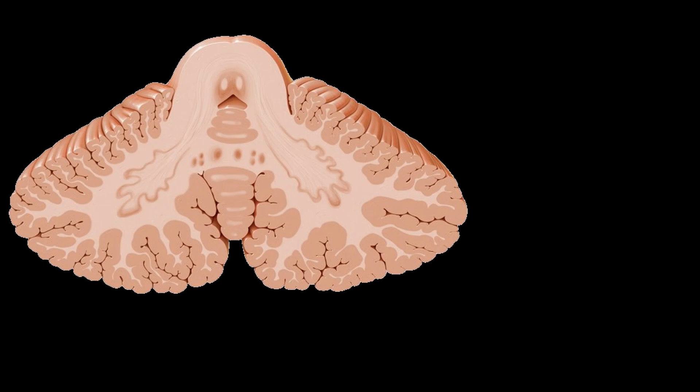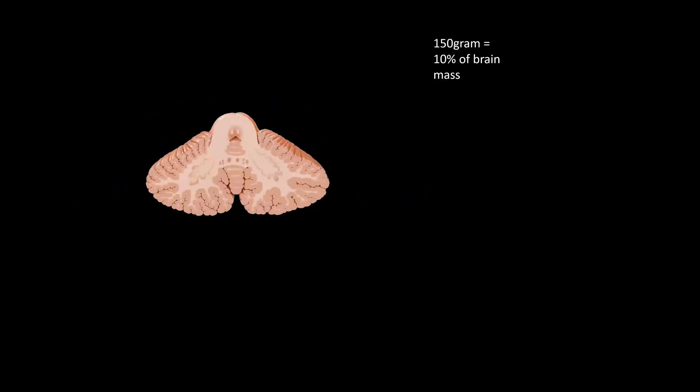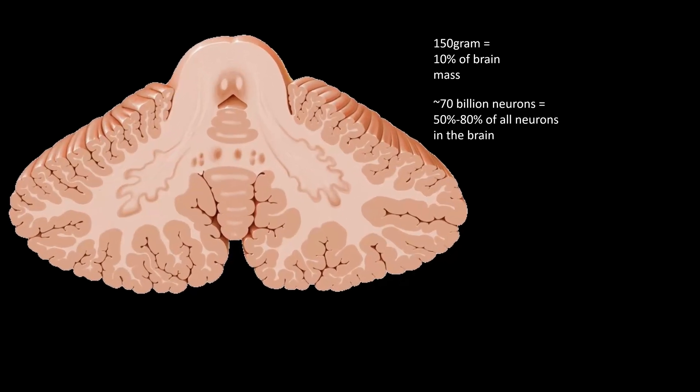Cerebellum translates to 'little brain,' and it deserves this name not only for its appearance, but also for the fact that despite its relatively small size, it contains more neurons than any other region in the brain. With roughly 150 grams, it only makes up about 10% of the entire brain. However, having about 70 billion neurons, it can host up to 80% of the total ones in the brain, but mostly about 50%.